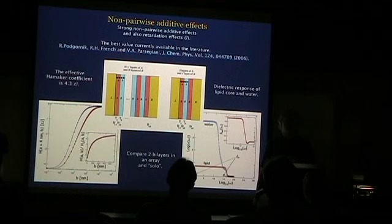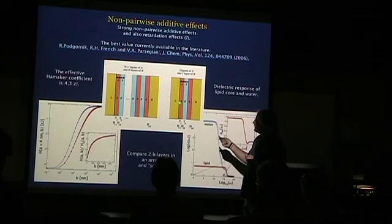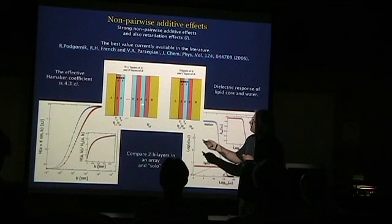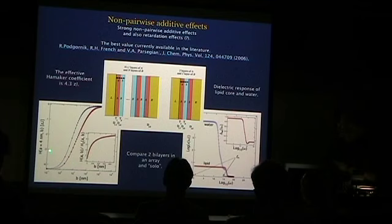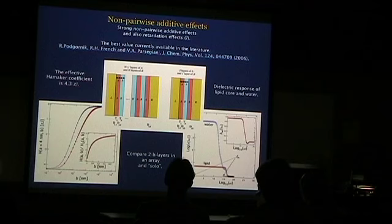You can see that nicely here. One case, I think blue, is the interaction for two layers in the universe, and red is the interaction between the same two layers but in an infinite array of other layers. There's a difference, as you can see, which is due to non-pairwise additivity of van der Waals interactions. That's an important feature of van der Waals interactions that is very difficult to take into account.